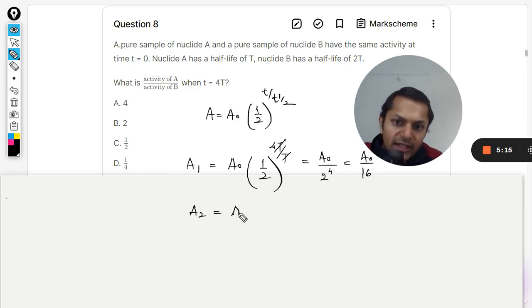Similarly we will find A₂ and that is A₀ times half raised to power... the time is 4t, the half life is 2t.